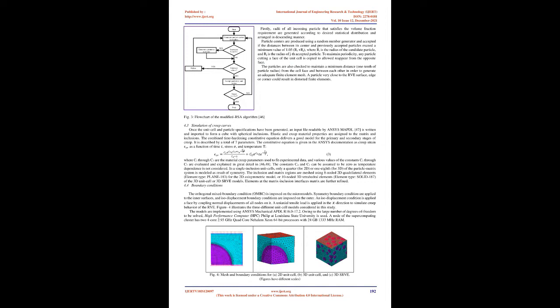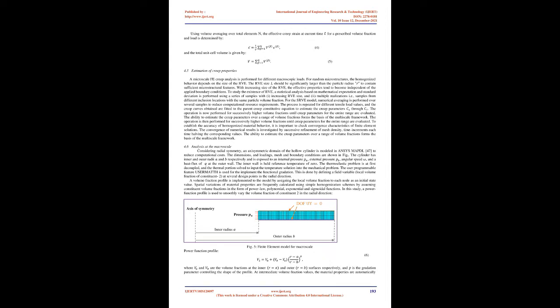3D morphologies with random multi-inclusions are expected to give more accurate predictions than single-inclusion models. While most models developed to predict the creep behavior of MMCs used the single-inclusion unit cell model, the RSA algorithm motivated researchers to model multiparticle RVEs. A few articles also aimed to study the effects of interfaces on material creep behavior. Multi-scale methods can address the spatial variation of FGMs. The model has been successfully implemented to study the time histories of creep strains and stress distributions of FG thick cylinders using different micromechanical models. Parametric studies are performed to study the effects of material distribution, maximum volume fraction, and cylinder thickness on the creep response.